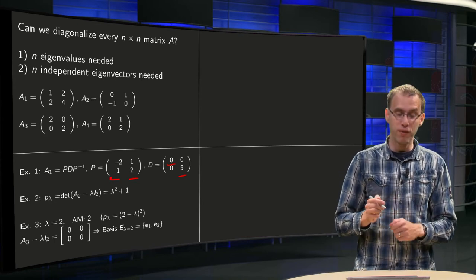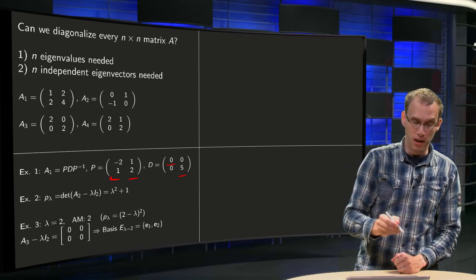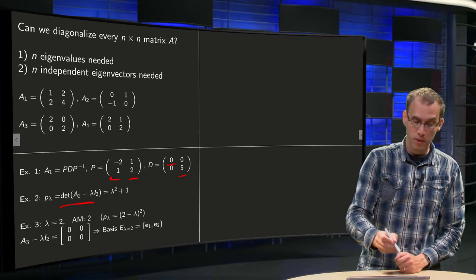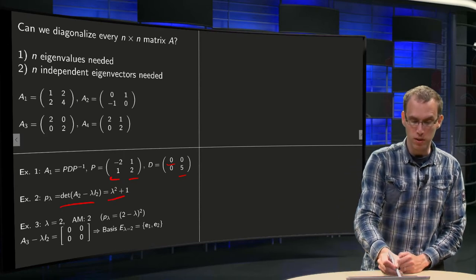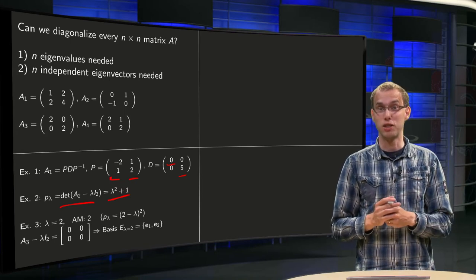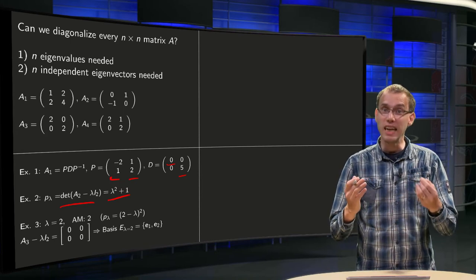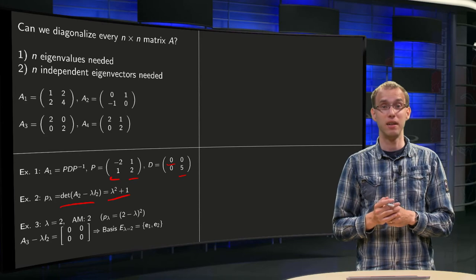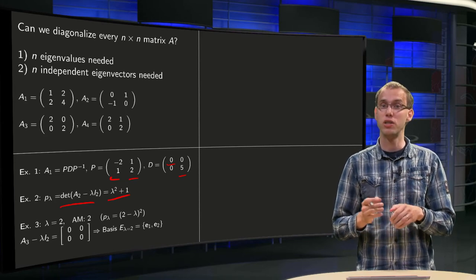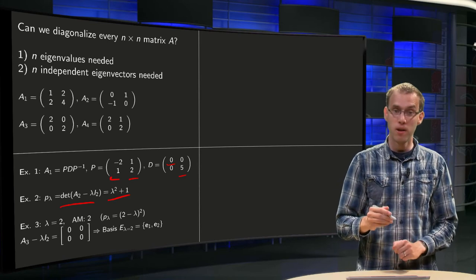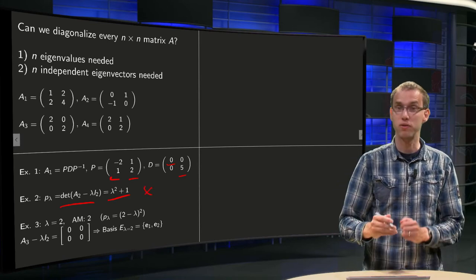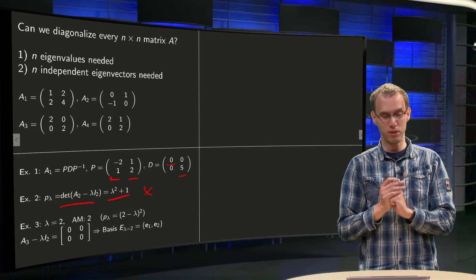Let's continue with A2. If we compute p(λ), which equals the determinant of A2 minus λ times I2, we get λ² + 1. The eigenvalues are the zeros of the characteristic polynomial, and this polynomial has no real zeros, so here we get stuck immediately. A2 is not diagonalizable because we don't even have real eigenvalues.